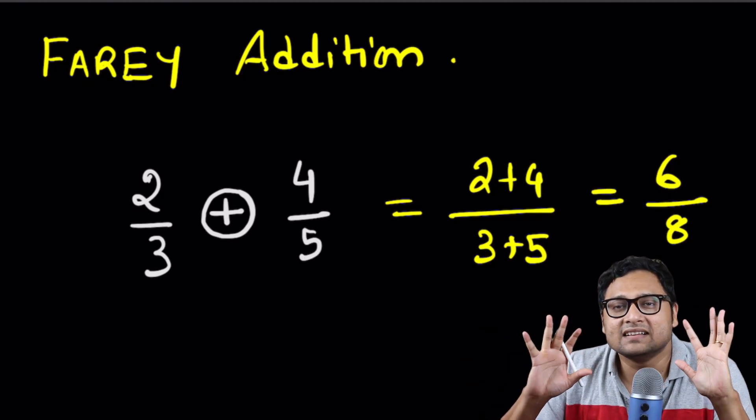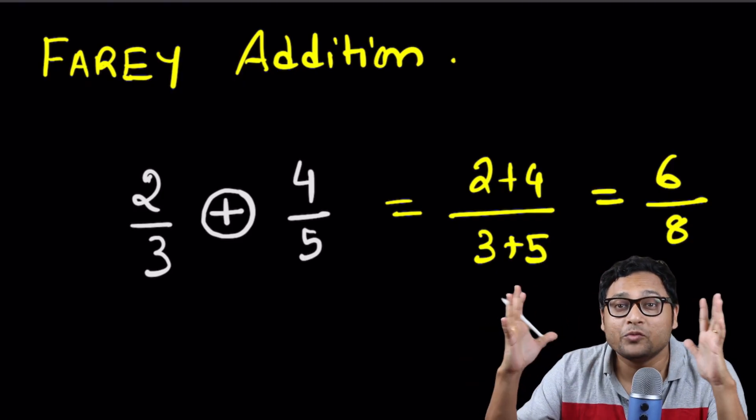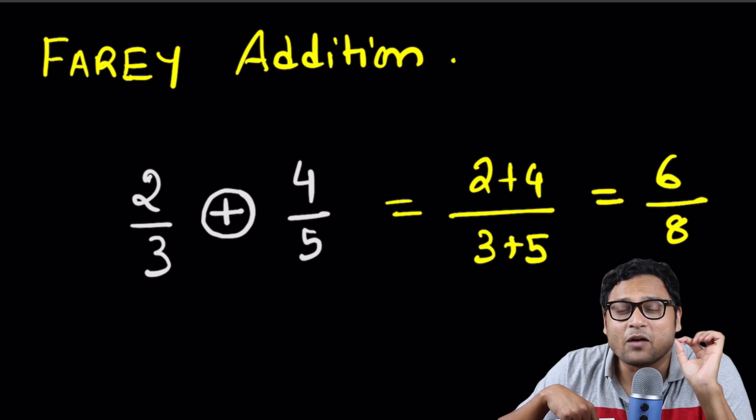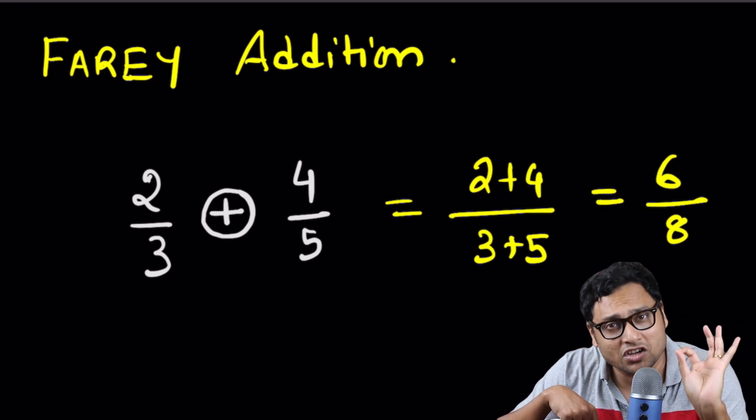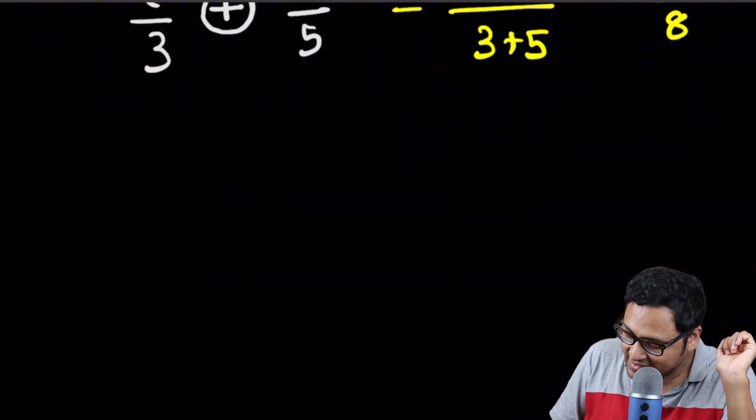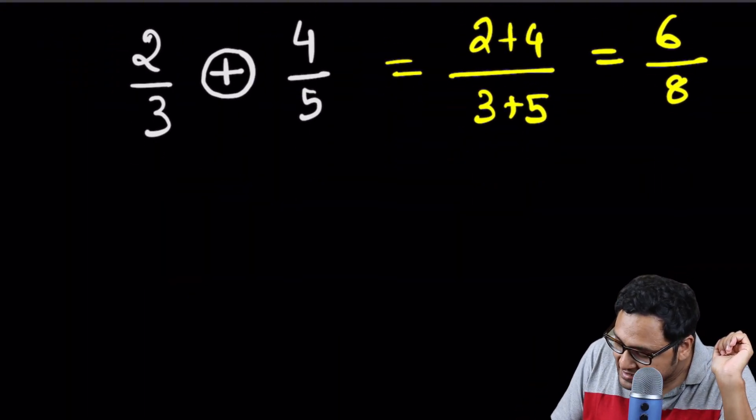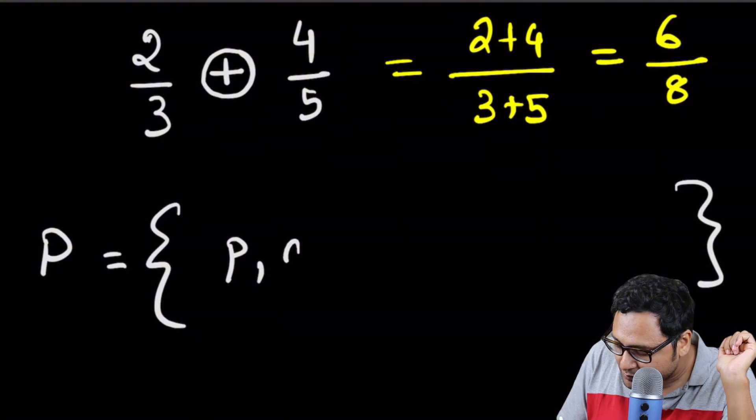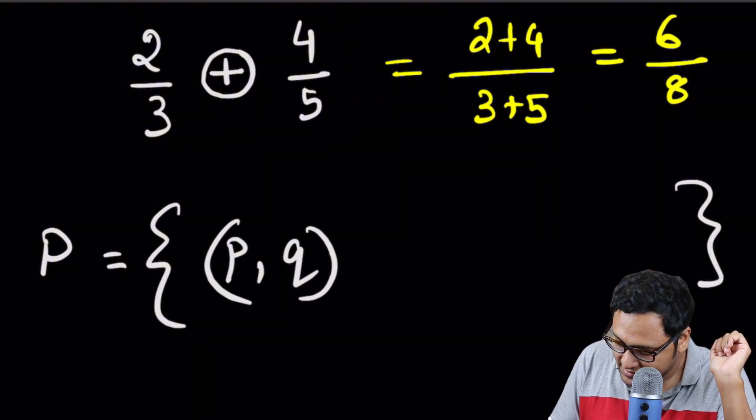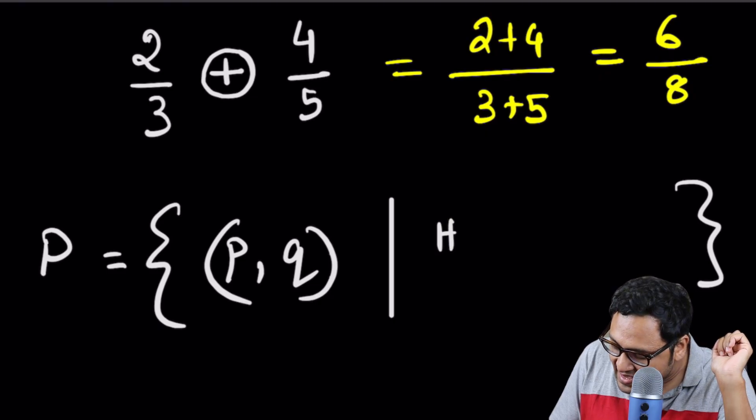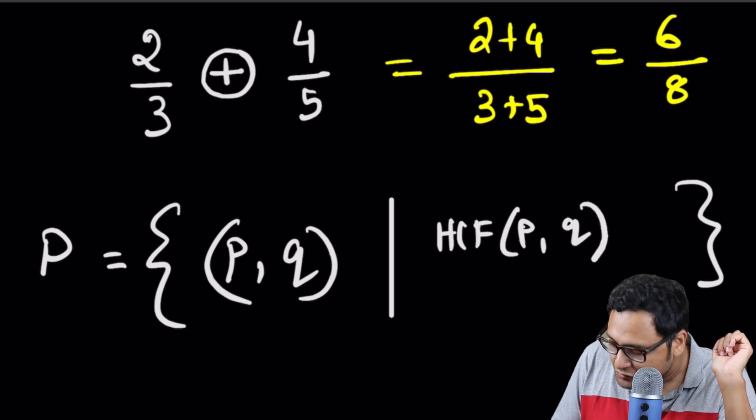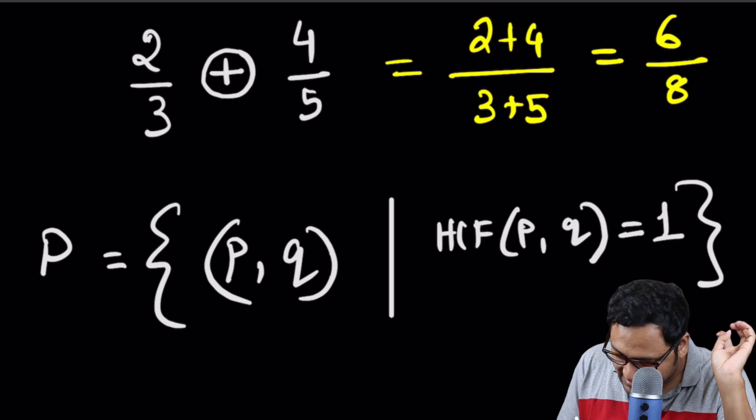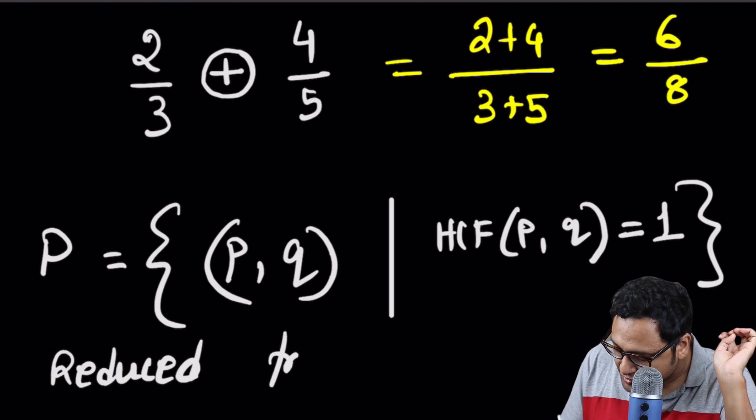Let us look at this a little bit more carefully and see how we can think about this geometrically. Because I promise, this particular method has a wonderful implication in the world of geometry as well as number theory. First, let's look at the set P. The set P contains all members P over Q, or P comma Q, such that HCF of P and Q is equal to 1.